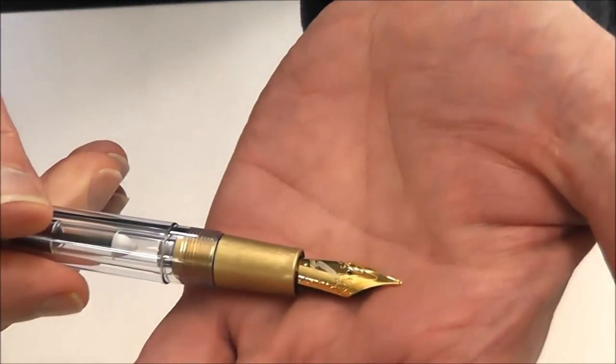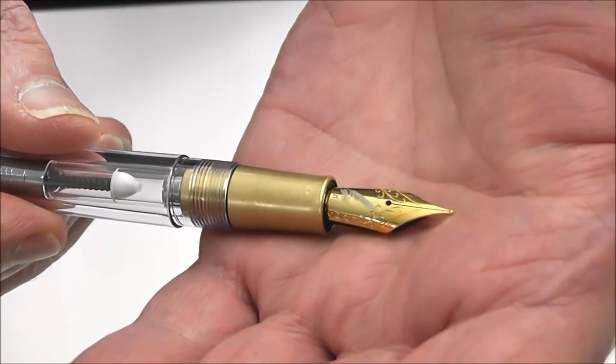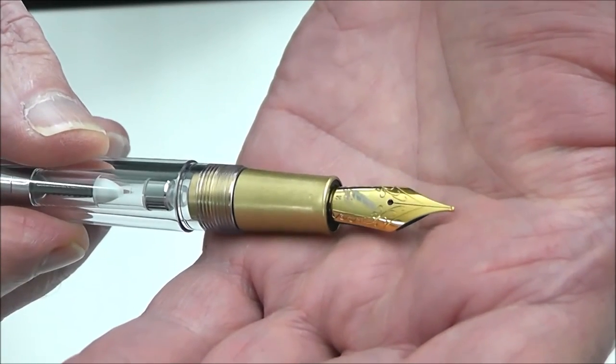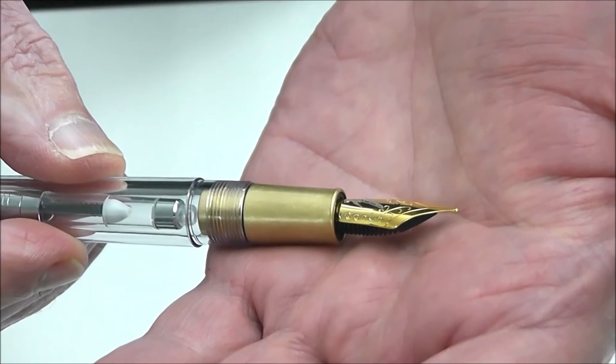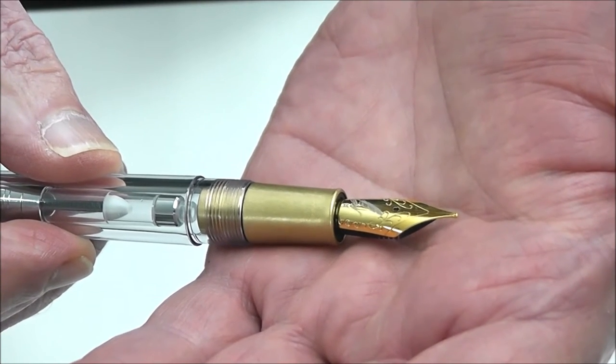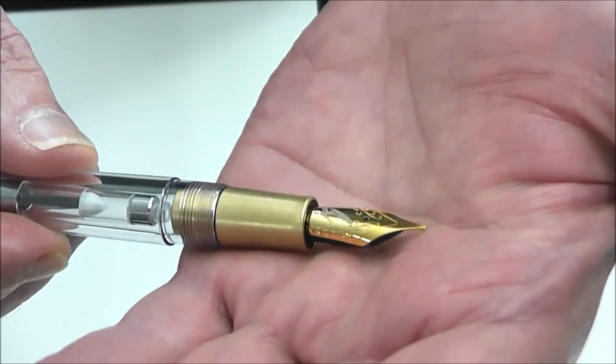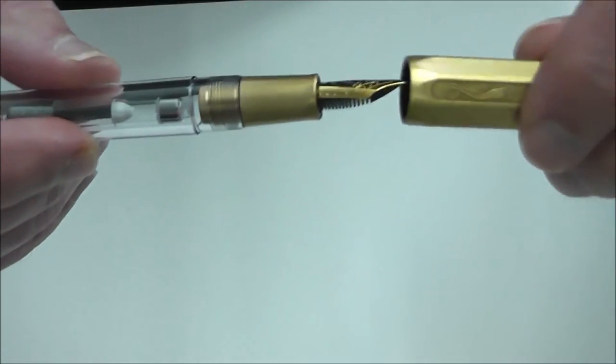Also, we take a look at the nib. Now on the extra fine and medium pens, you have this rather nice gold nib. Gold is not on the fine, broad or the stub. That's a different colour nib. Still very nice looking, but not quite the same.